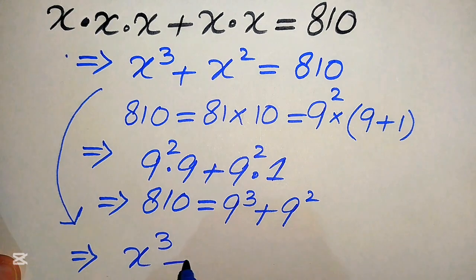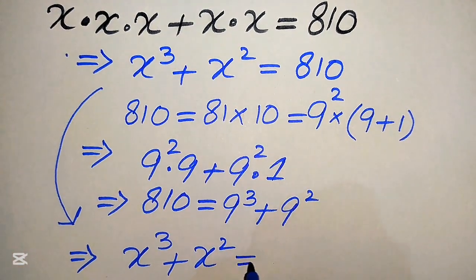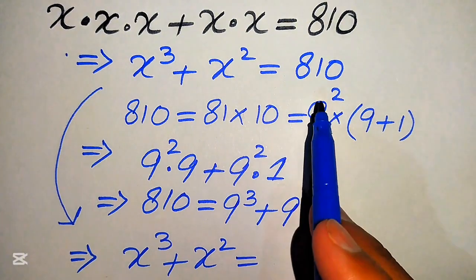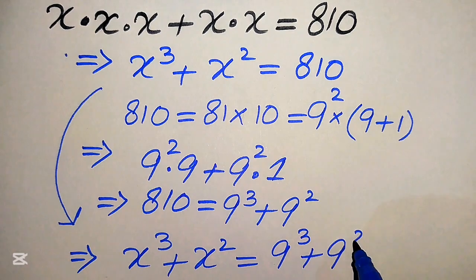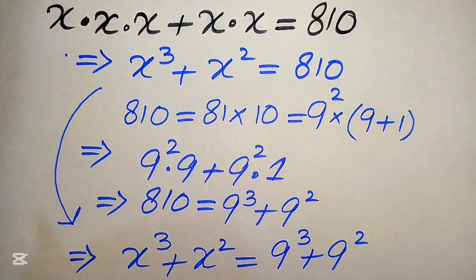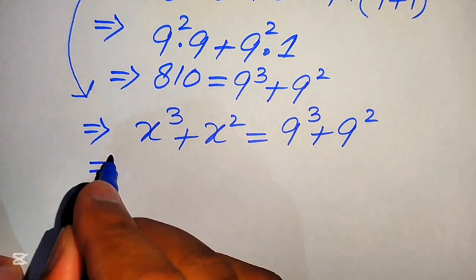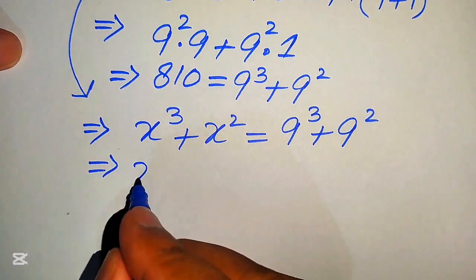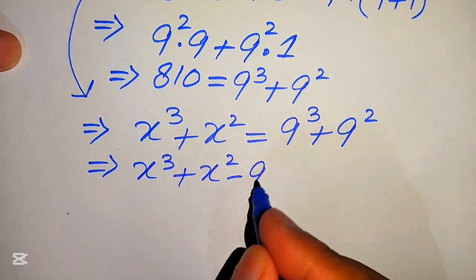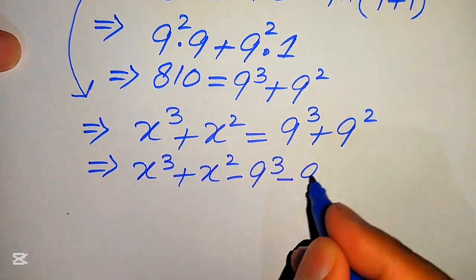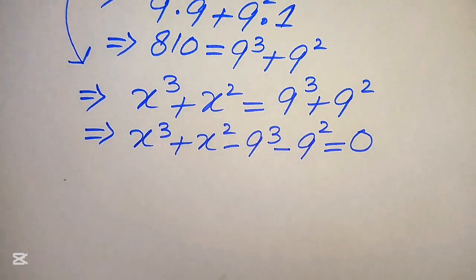Our equation is x cubed plus x squared equals 810, and we replace 810 with 9 cubed plus 9 squared. We move the terms from the right-hand side to the left-hand side, giving us x cubed plus x squared minus 9 cubed minus 9 squared equals 0.